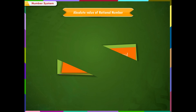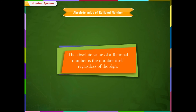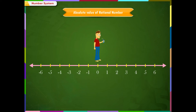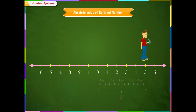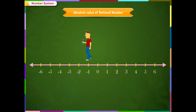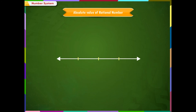Absolute Value of a Rational Number. The absolute value of a rational number is the number itself regardless of the sign. For example, Ravi walked from 0 to 5 on a number line — he walked a distance of 5 units. Ravi walked from 0 to (-5) on a number line — he walked a distance of 5 units again. The distance of rational number A from 0 on the number line is called its absolute value.